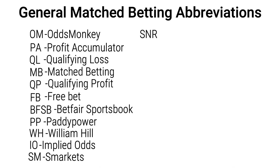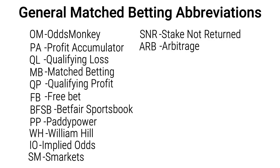We then have SNR which stands for stake not returned. Then there's ARB — this is when you place a bet where the lay odds are lower than the back odds and it gives you a slight profit. You also have SHARB, a less commonly done thing where you go into a shop, place a back bet, then lay the opposing bets on your phone to create a SHARB and make a profit that way.